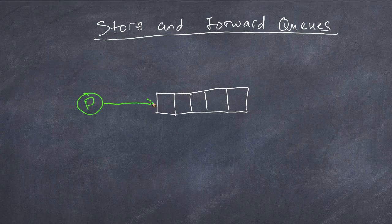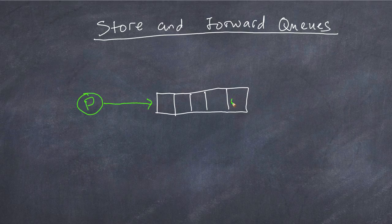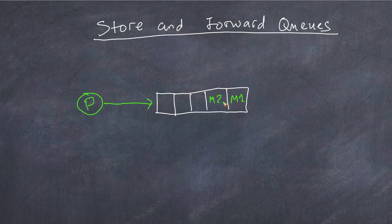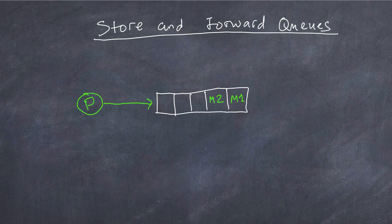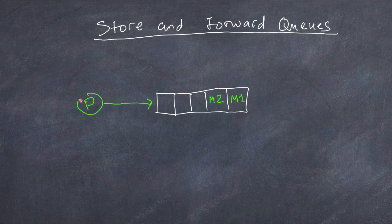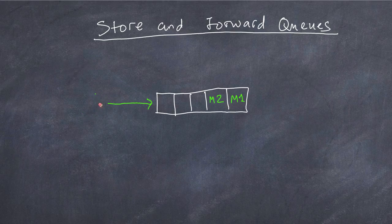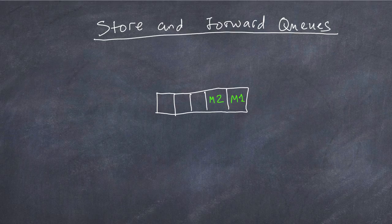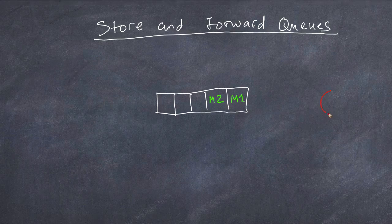The one characteristic about the store and forward queue is that the publisher and the consumer do not need to be running at the same time. So once the publisher publishes a message to the queue, it can then disappear. At a later time, the consumer can come up and connect to the queue.